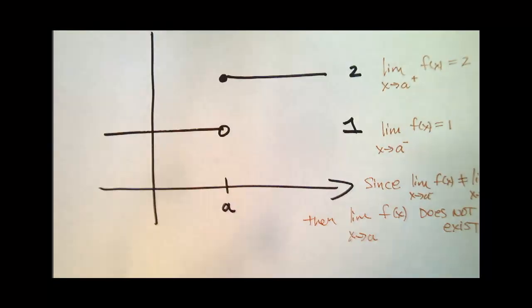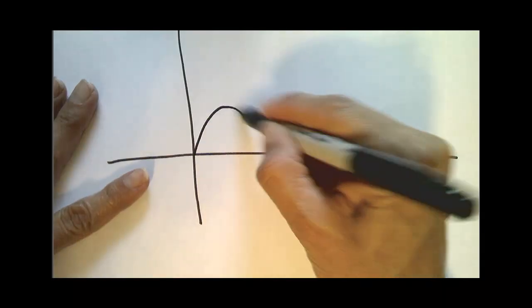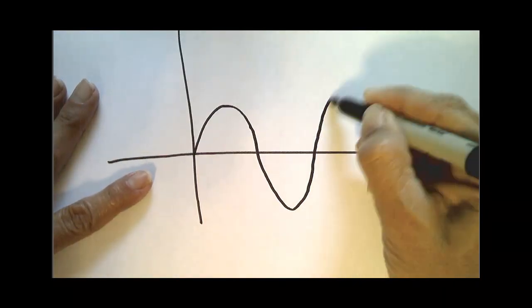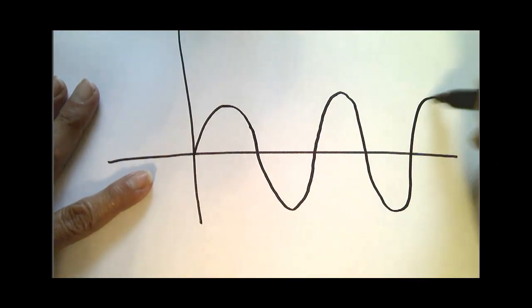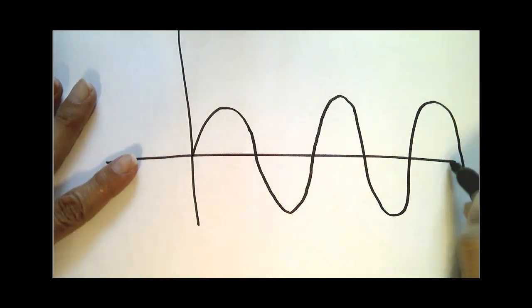Alright, let's look at a case where it does have the same left and right-handed behavior, but it can't decide where it's going. So perhaps you recognize this very bad sketch of the sine function.